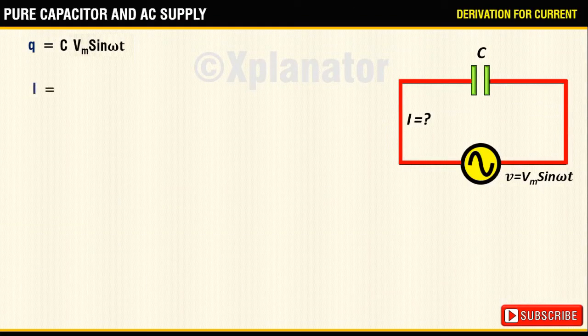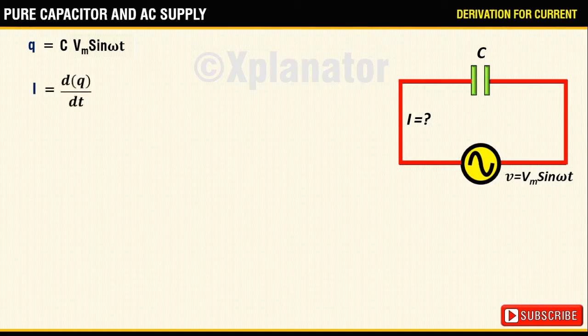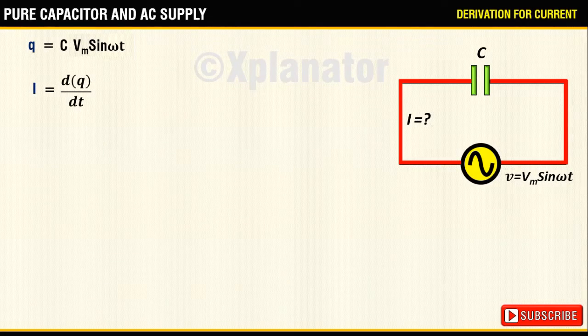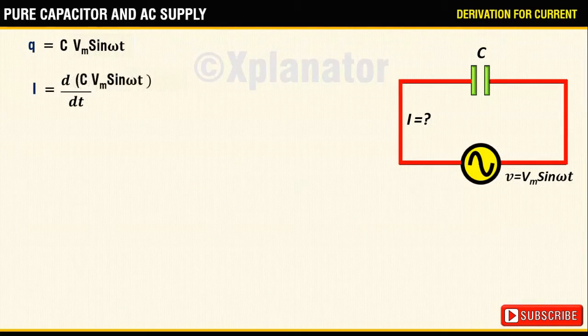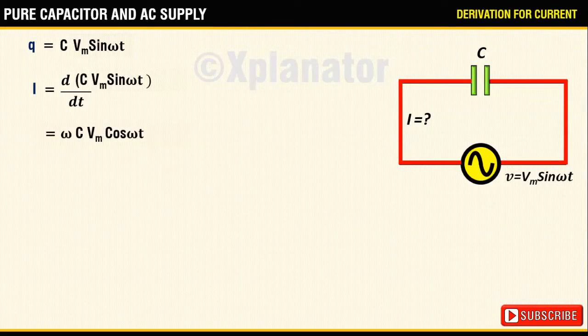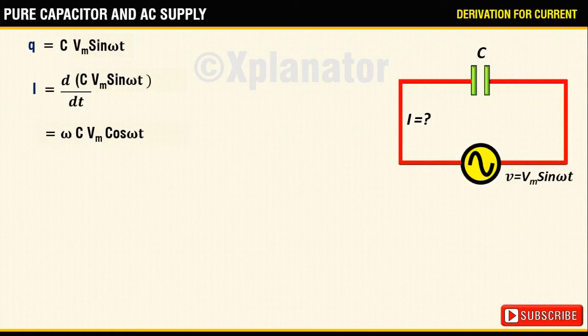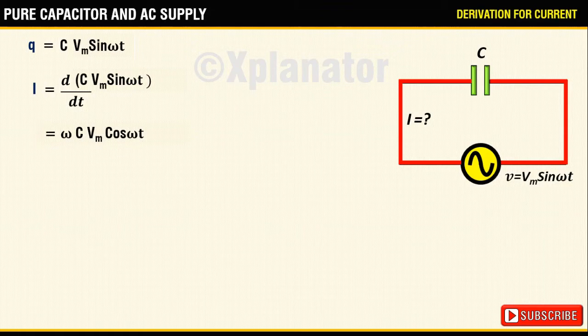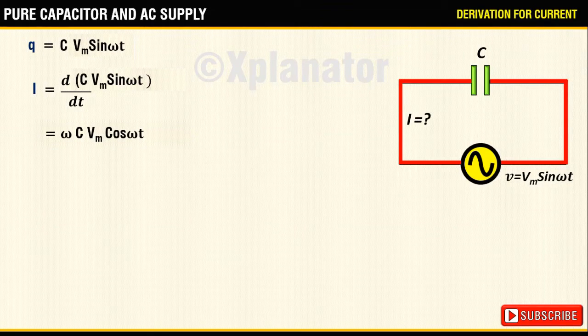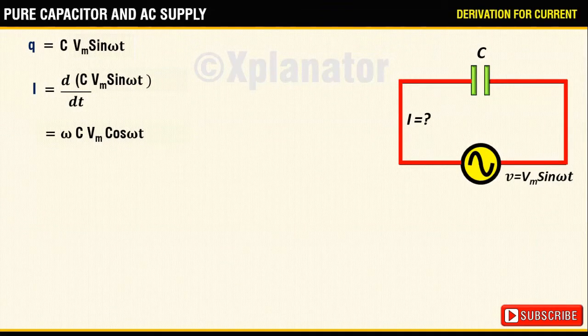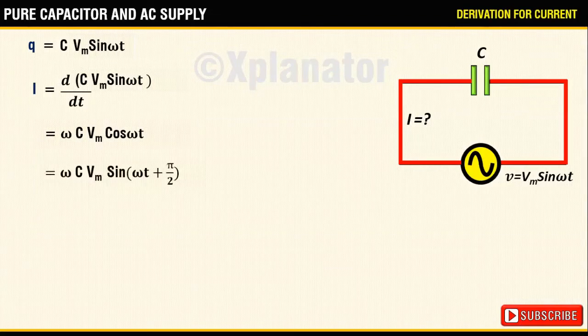I can be written as dq by dt as per the definition. So substituting and differentiating, you get I equals omega C Vm cos of omega t. To maintain uniformity in the equations, convert this in terms of sine equation.